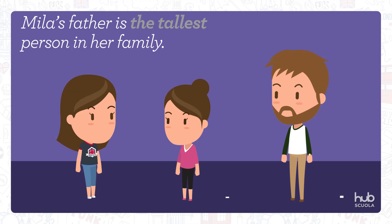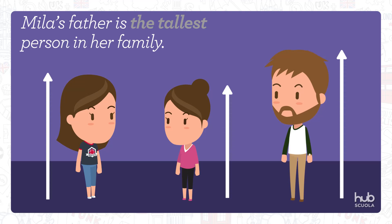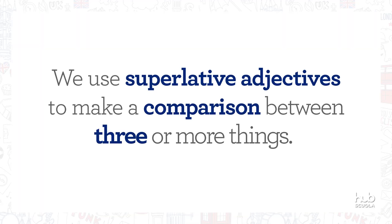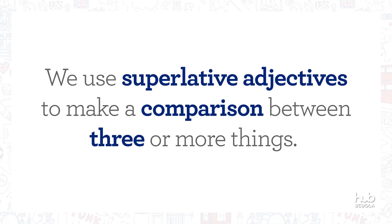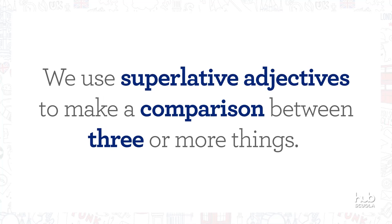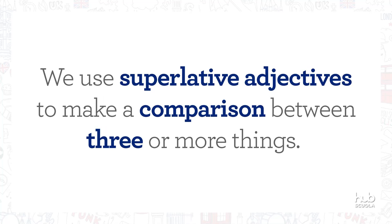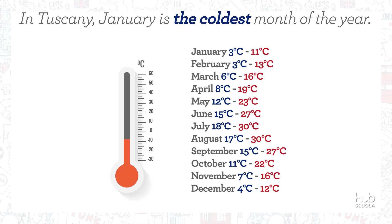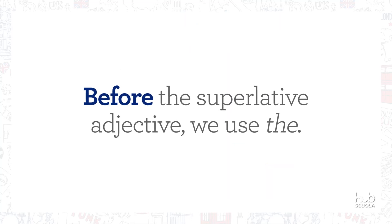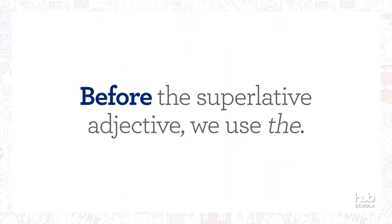Mila's father is the tallest person in her family. We use superlative adjectives to make a comparison between three or more things. For example, in Tuscany, January is the coldest month of the year. Before the superlative adjective, we use 'the'.